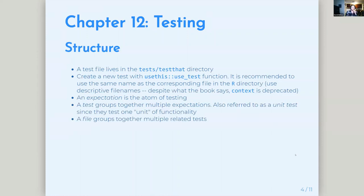The structure is a tests/testthat directory, created when you run use_testthat(). To create a new test within that directory, use the use_test() function and supply the file name. Generally you want it to match the corresponding R file in the R directory — one R file, one test file. It'll automatically append 'test-' to the file name so you don't even need to do that. And despite what the book says, don't use the context() function — it's deprecated in favor of using file names instead. The book is not super up to date.